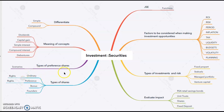Then we move on to the types of preference shares. There are eight of them, and you need to be able to identify them from the scenarios given. There are also a number of concepts you'll need to be able to explain, such as dividends, capital gain, simple interest, compound interest, and debentures.